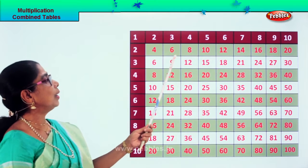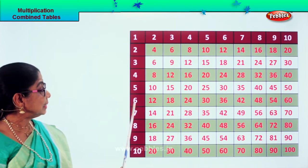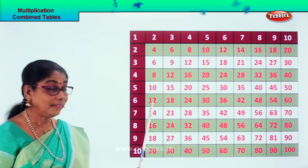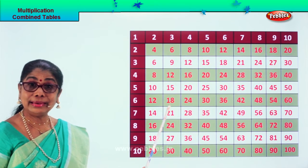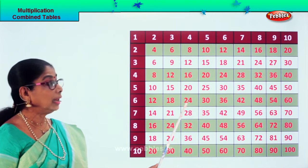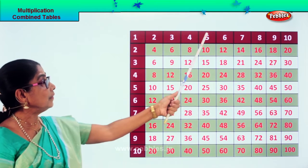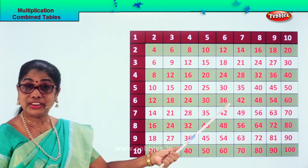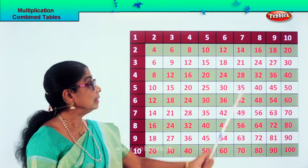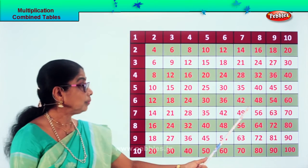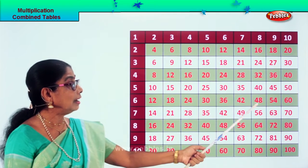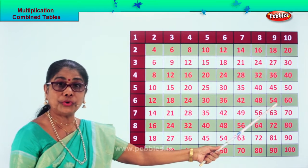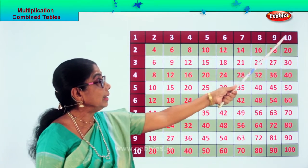Now let's look at six. Six ones are six, six twos are twelve, six threes are eighteen, six fours are twenty-four, six fives are thirty, six sixes are thirty-six, six sevens are forty-two, six eights are forty-eight, six nines are fifty-four, six tens are sixty.